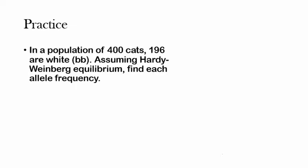This is our first problem and before I get into the explanation and the answers, I would recommend that you read this question on your own and try to solve it. I'm going to give you a couple seconds to pause your video. Hopefully by now you have done this question and gotten an answer. The correct answers are that P equals 0.3 or 30% and Q equals 0.7 or 70%.